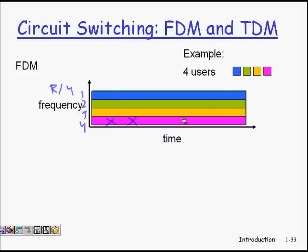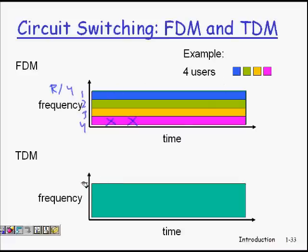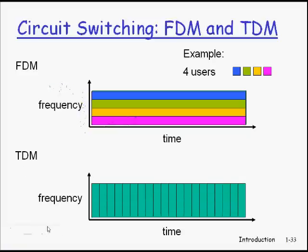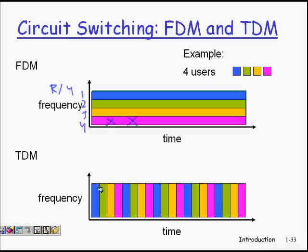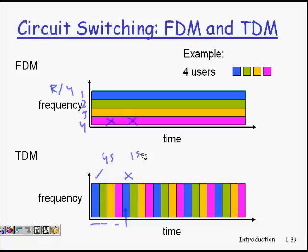Alternatively, with TDM (Time Division Multiplexing), instead of dividing the frequency, we give users time slots. The time is divided into four repeating slots — one second each for blue, green, yellow, and pink users. If blue has data to send during its slot, it sends; if not, the slot is unutilized. Each user's time slot is fixed with dedicated resources.